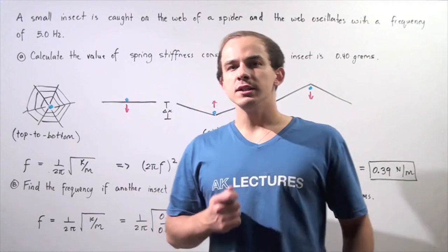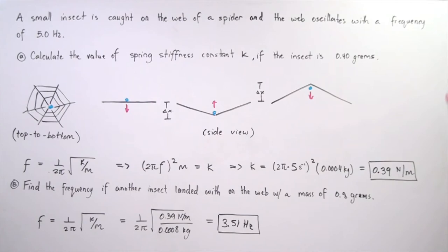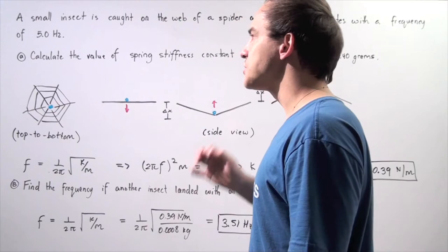So let's look at the following example. Suppose a small insect is caught on the web of a spider and the web oscillates periodically with a frequency of 5 hertz. So the frequency is 5 cycles every single second.